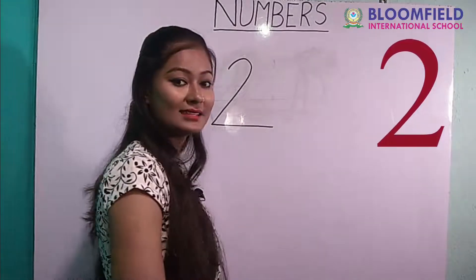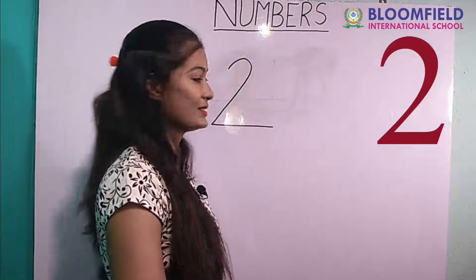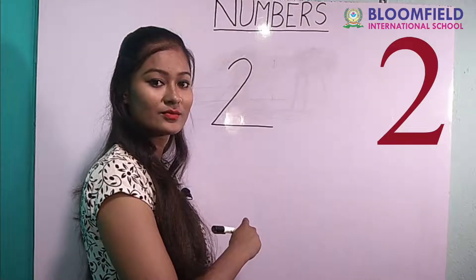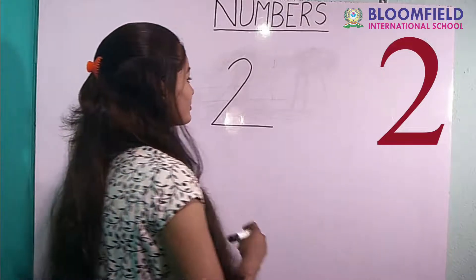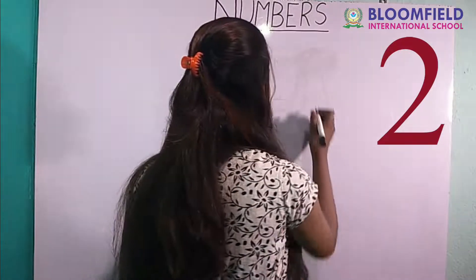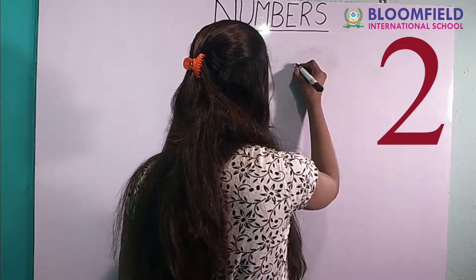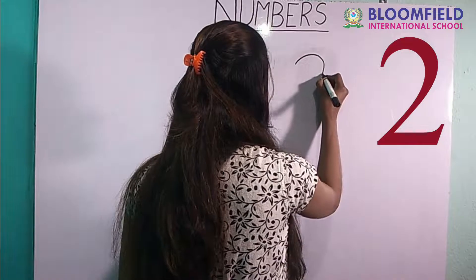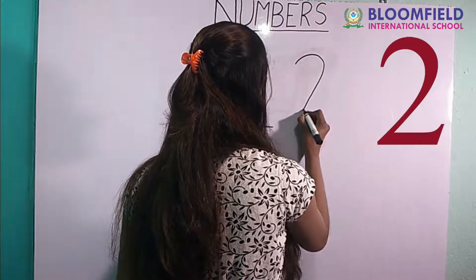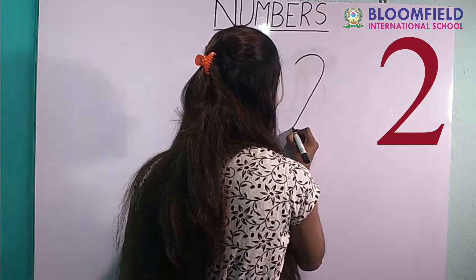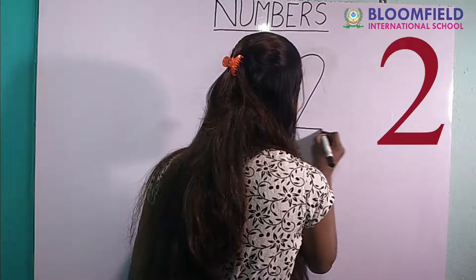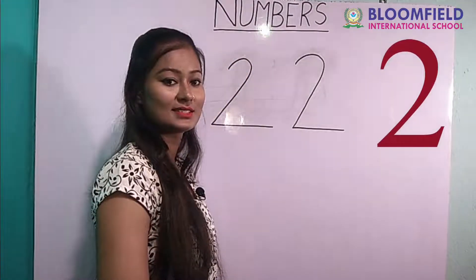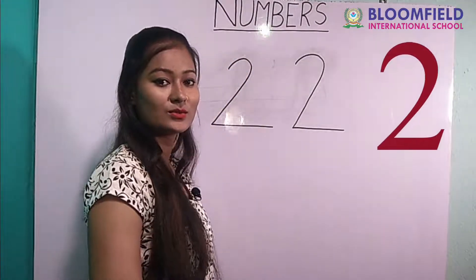Good. Next: small curve, then slanting line, sleeping line. Two.